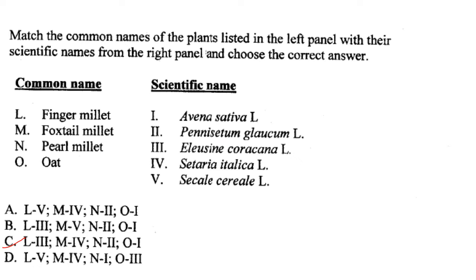Match common plant names with their scientific names. Finger millet is Eleusine coracana — L3, so we can strike off A and D. Foxtail millet is Setaria italica — M4. Pearl millet is Pennisetum glaucum — N2. Oat is Avena sativa — O. Answer is option C.